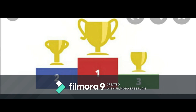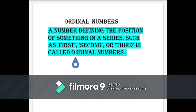So, all these numbers are called ordinal numbers. Today we will learn about ordinal numbers. An ordinal number is a number defining the position of something in a series, such as first, second, or third.